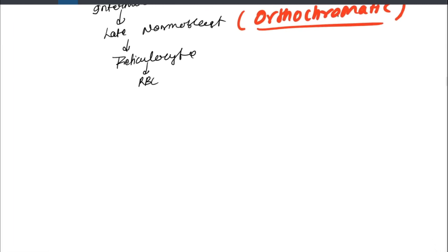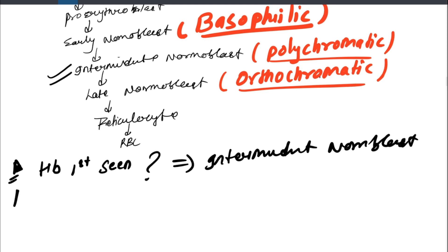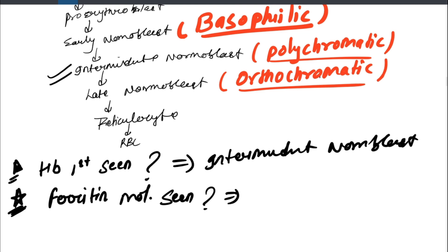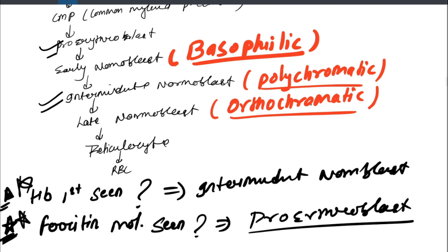Now let's discuss important exam questions. The examiner can ask: hemoglobin is first seen in which stage? Your answer should be the proerythroblast. The second important question is: the ferritin molecule — an iron-containing molecule — is first seen in which stage? Again, your answer should be the proerythroblast. Do not forget these highly important exam questions.